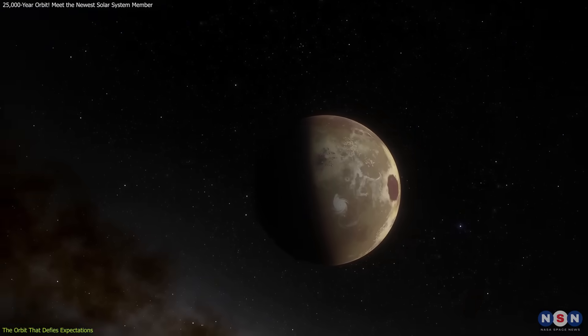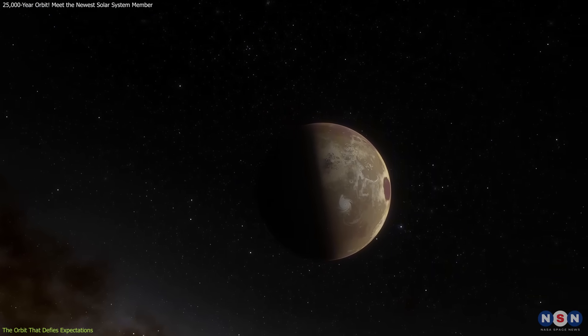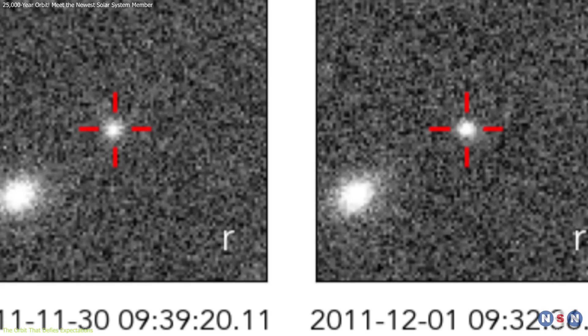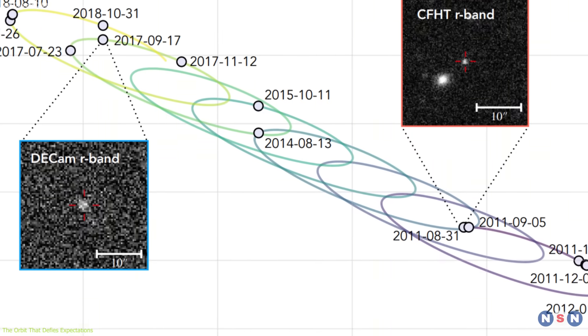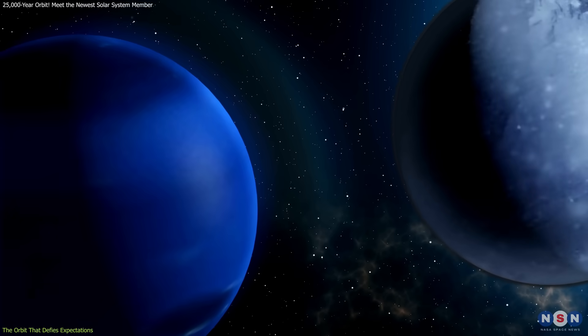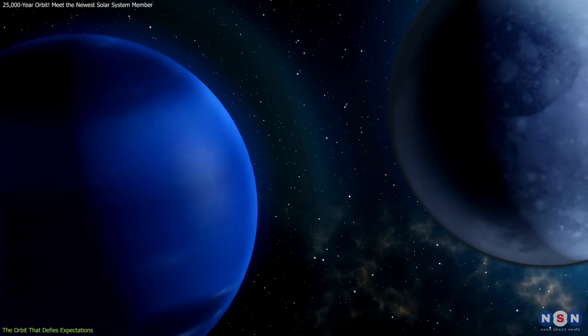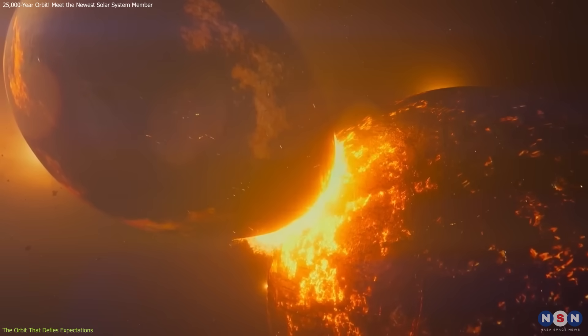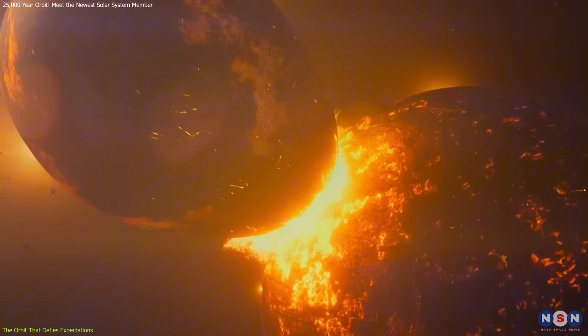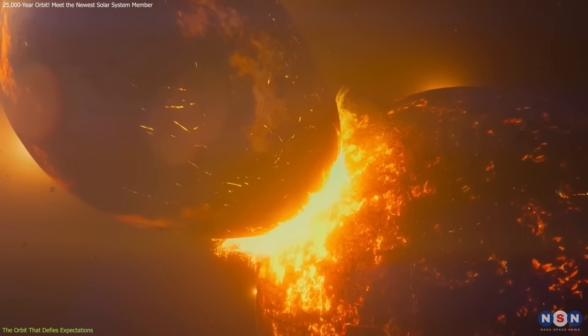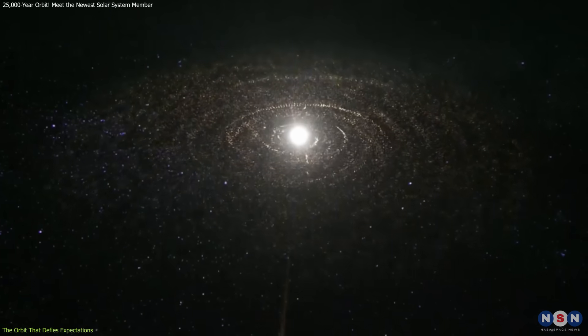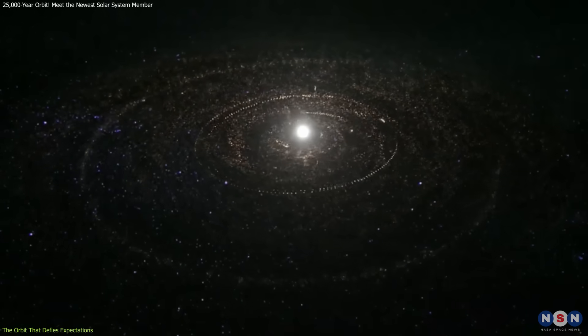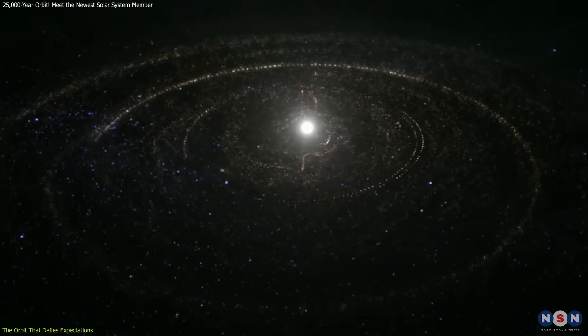What really intrigues scientists, however, is how such a large object ended up on such an unusual orbit. Some theories suggest gravitational encounters with Neptune or even collisions with other massive bodies early in the solar system's history could have pushed it outward. Others propose it may have formed closer to the sun and been flung into its current orbit by interactions with the giant planets during their migration phases.